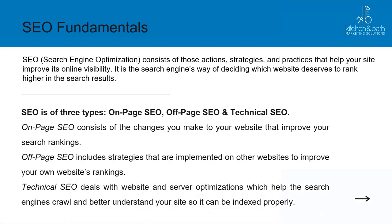SEO fundamentals: search engine optimization consists of actions, strategies, and practices that help your site improve its online visibility. It is the search engine's way of deciding which websites deserve to rank higher. There are three types of SEO: on-page, off-page, and technical SEO. On-page SEO covers everything that happens on your site — the content you create, user experience, layout, and where you place your CTAs. All of that helps with time on page and lowers your bounce rate.